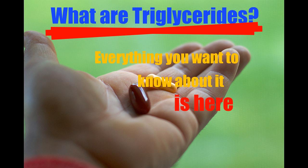Bacteria, however, possess the ability to synthesize odd- and branched-chain fatty acids. Consequently, ruminant animal fat contains odd-numbered fatty acids, such as 15, due to the action of bacteria in the rumen. In addition, most natural fats contain a complex mixture of individual triglycerides, and because of this, they melt over a broad range of temperatures.